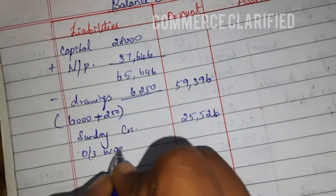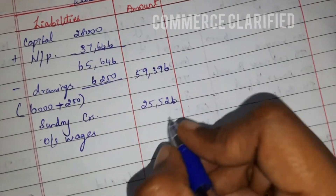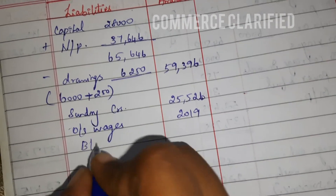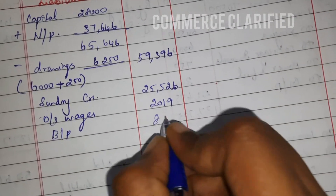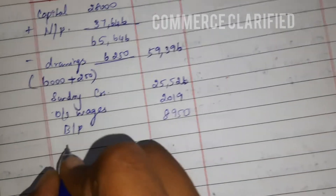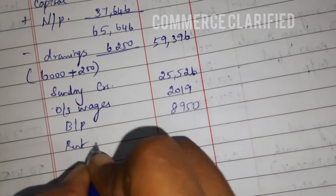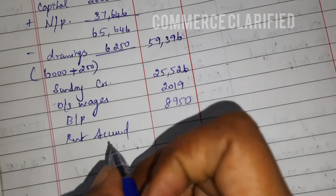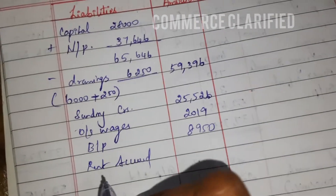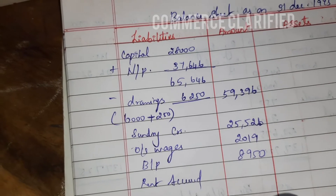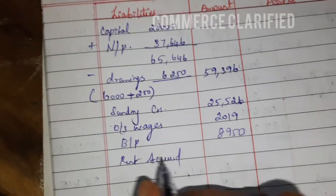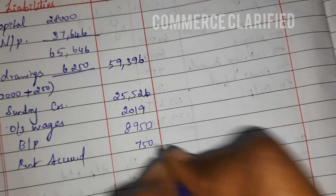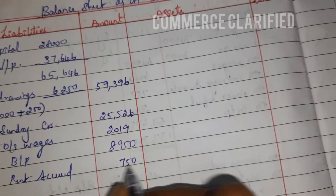On the liability side: outstanding wages from the trial balance are added. Bills payable is a liability. Rent accrued means rent received but not yet earned — since it appears on the credit side of the trial balance, it is treated as a liability of 750.